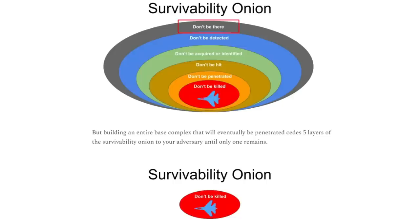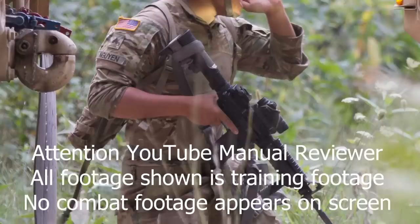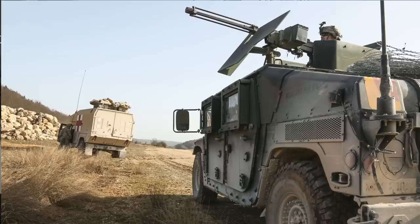I've shown the survivability onion a few times in videos about the Bradley and in Substack articles about Iran's underground airfields. The survivability onion is basically a map of how to survive an encounter with an adversary. Today I want to talk about how you might use the survivability onion to understand how you can defend yourself in a vehicle or on foot.